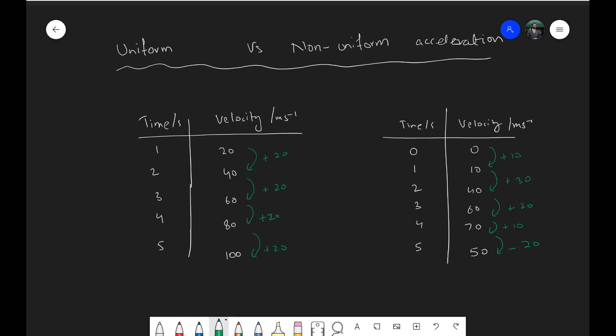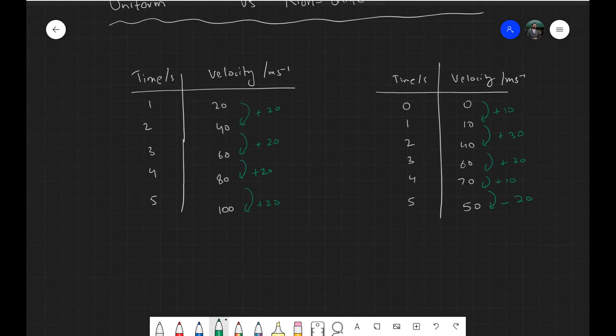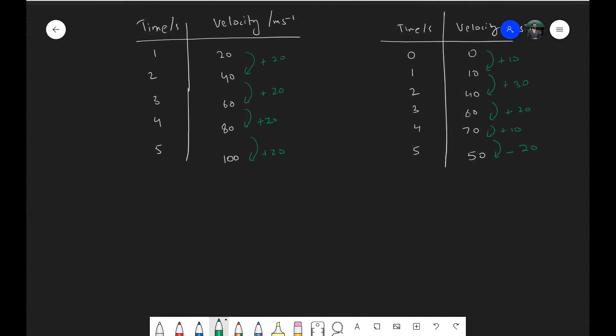And this can help us basically decide which one is uniform and which one is non-uniform. So the name is quite self-explanatory. Uniform acceleration is defined as when the rate of change of velocity is constant for every interval of time.